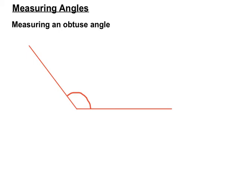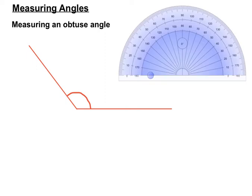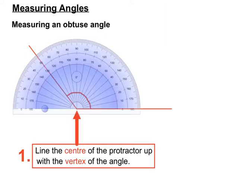When we're measuring an obtuse angle, it's very similar. The steps are almost the same. Step one is to take our protractor and line up the center of the protractor with the vertex of the angle. Notice the center of the protractor is right in the corner where the two arms of the angle meet.